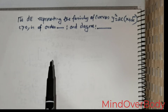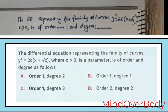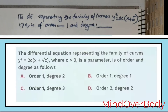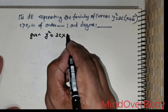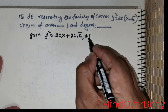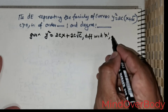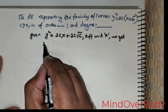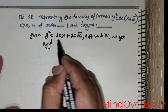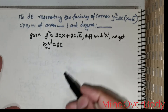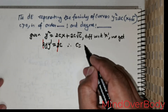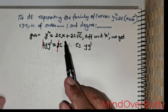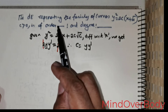We are given: the differential equation representing the family of curves y² = 2c(x + √c), with c > 0, and we need to find the order and degree. Starting with y² = 2cx + 2c·√c. Differentiating with respect to x: 2y·y' = 2c. Canceling the 2s: c = y·y'. Since there is one arbitrary constant, the order is 1.